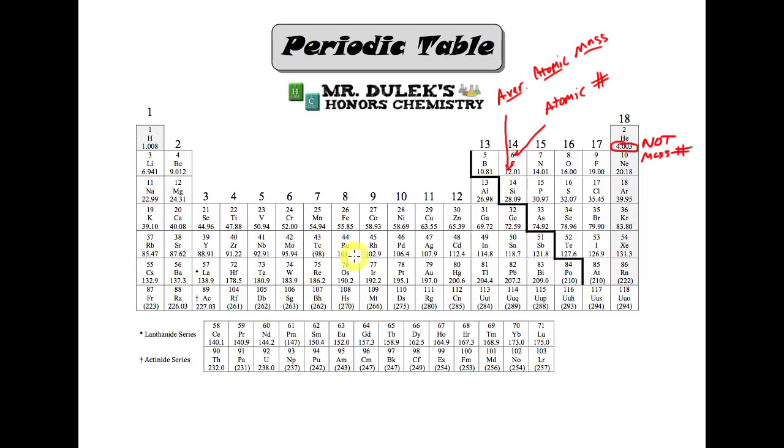You're going to see some that kind of fall in the middle. Right here, 106.4. It's kind of falling in the middle, very close to 106 and 107 and 105. So, hopefully that gives you a general idea of what average atomic mass is.